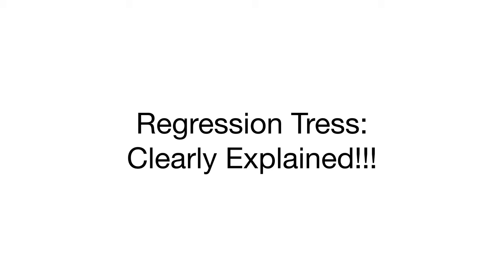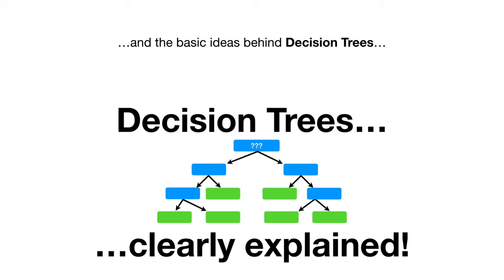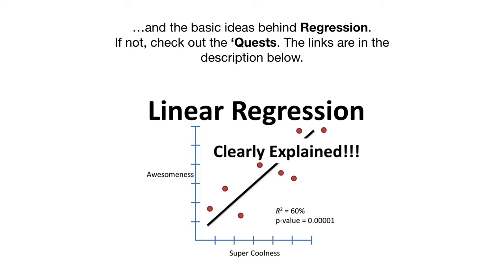This StatQuest assumes you are already familiar with the trade-off that plagues all of machine learning, the bias-variance trade-off, and the basic ideas behind decision trees, and the basic ideas behind regression. If not, check out the quests. The links are in the description below.